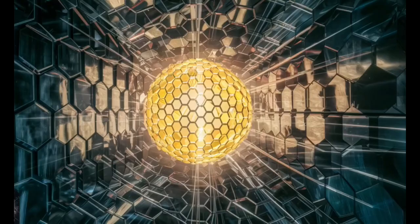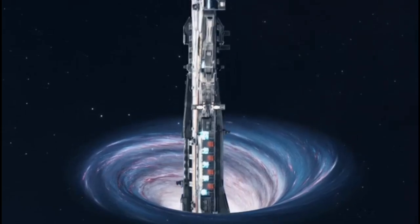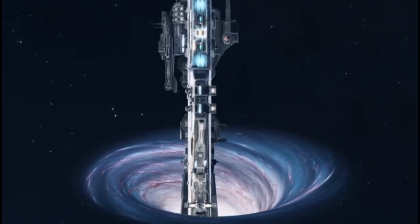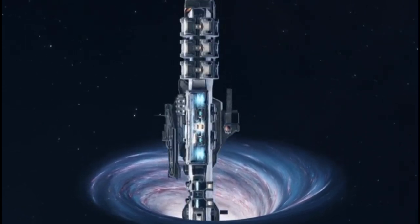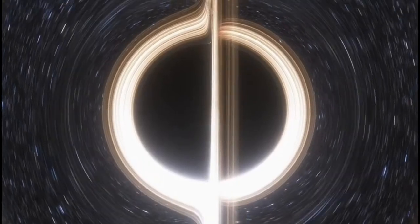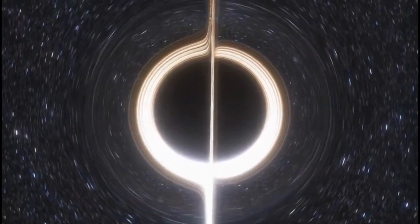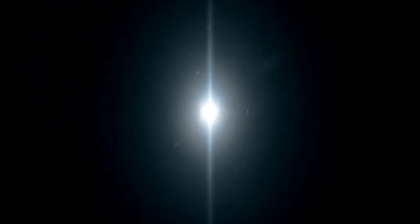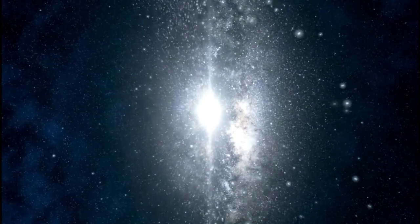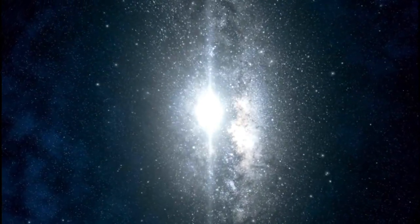Usually, we think adding speed makes something go faster, but Einstein said there's a speed limit, light speed. One weird thing is that events that happen at the same time for one person might not for another moving fast. Length can also change. Moving objects look shorter in the direction they're moving. And there's the famous equation E equals mc squared, showing that energy and mass can swap. This helps us understand how tiny particles act when zooming along and how nuclear reactions work.